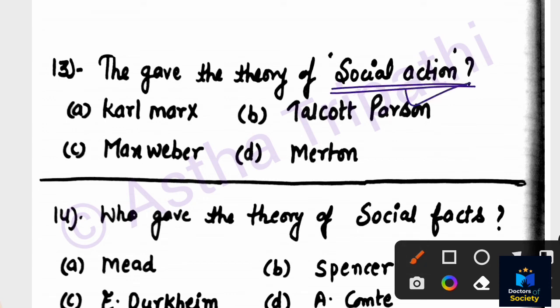Question number twelve: Who gave the theory of social action? Options are Karl Marx, Talcott Parsons, Max Weber, Martin. This is an easy question — the theory of social action was given by Max Weber.